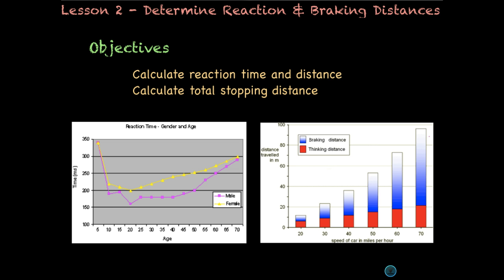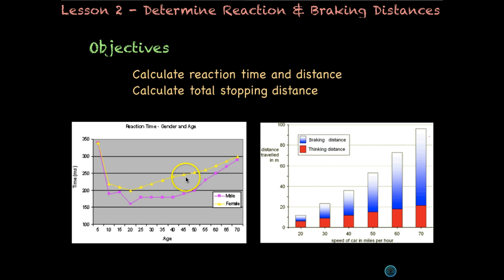Here are some interesting charts on reaction time. This first chart shows time of males in purple versus females in yellow. On the bottom we have age and on the y-axis we have time. As we get older our reaction time definitely decreases, but you can see that females' reaction time is much slower than males.